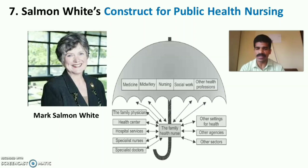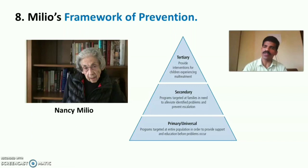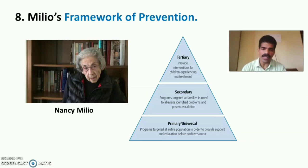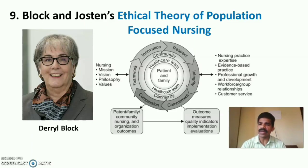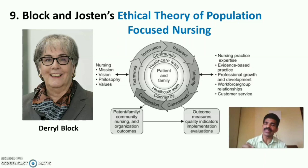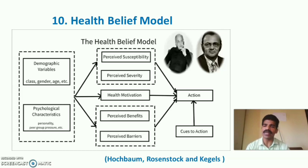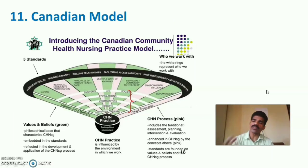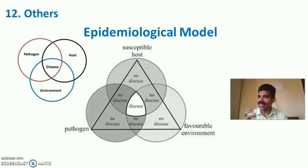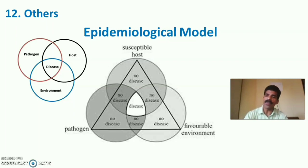The sixth theory is Roy's Adaptation Model by Sister Callister Roy. The seventh is Solomon White's Construct for Public Health Nursing, introduced by Mark Solomon White. The eighth is Melio's Framework for Prevention by Nancy Melio, applicable at primary, secondary, and tertiary levels. The ninth is Bloch and Jouston's Ethical Theory of Population-Focused Nursing. The tenth is the Health Belief Model by Hochbaum, Rosenstock, and Kegel. The eleventh is the Canadian Model, and the twelfth includes other models such as epidemiological theories.